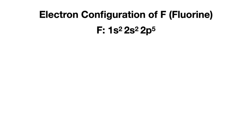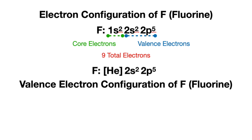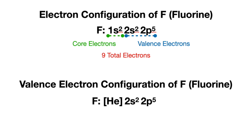To summarize: the full electron configuration of fluorine has 2 core electrons in the 1s subshell and 7 valence electrons in the 2s and 2p subshells, giving 9 total electrons. The valence electron configuration shows 2 plus 5, making 7 valence electrons.